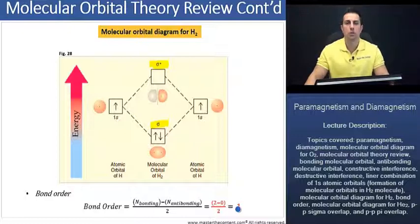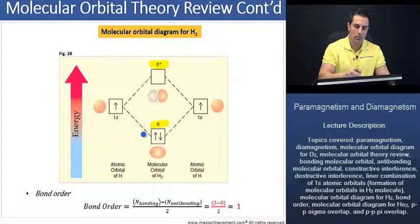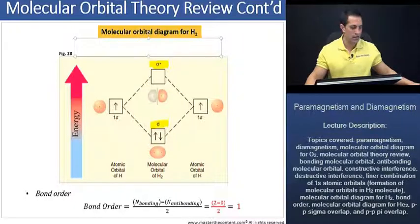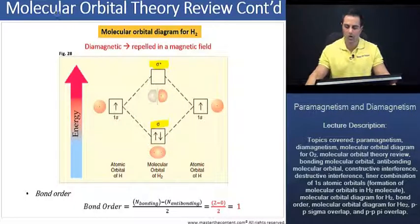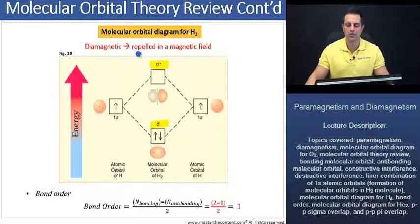Now, I have a question for you. If you recall, because the H2 molecule here has no unpaired electrons, is the H2 molecule going to be paramagnetic or diamagnetic? Well, if you had guessed diamagnetic, you're correct, because there are no unpaired electrons. Thus, our molecule is going to be slightly repelled in a magnetic field.